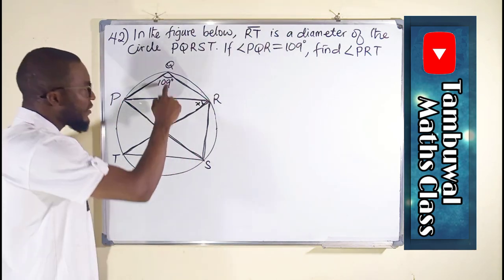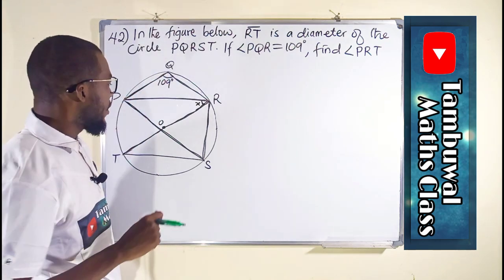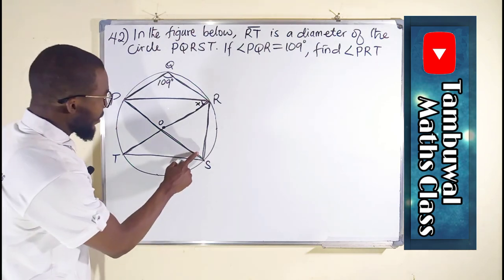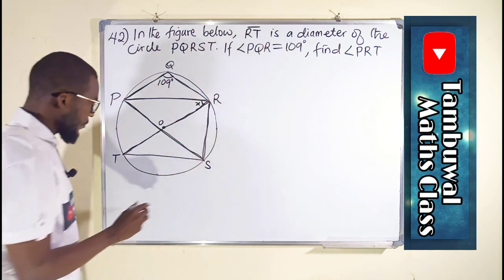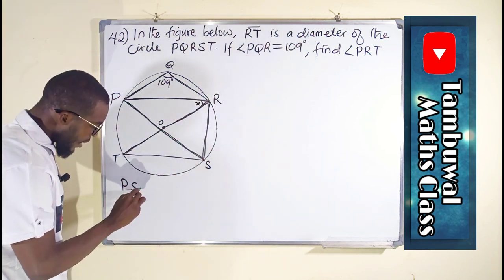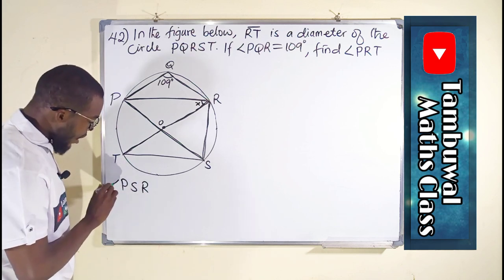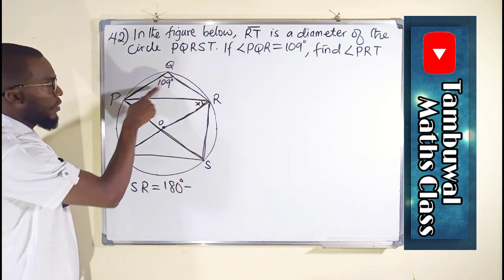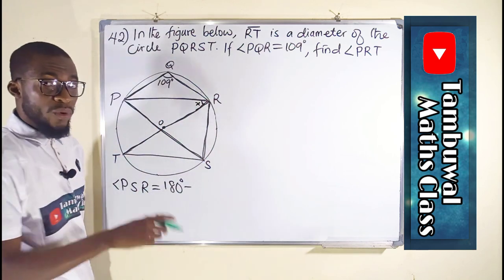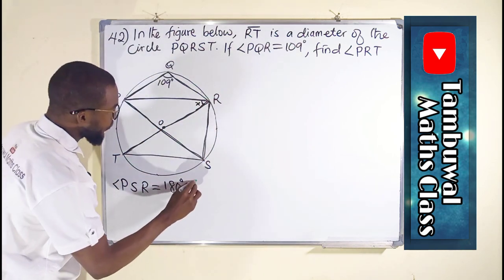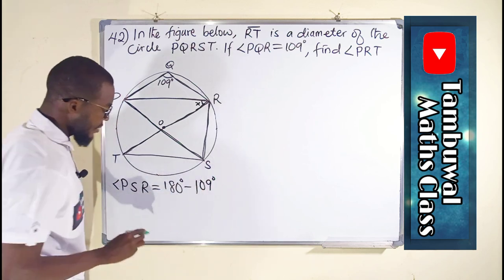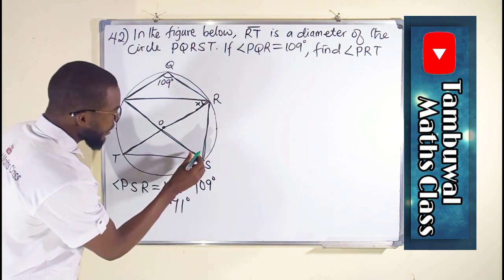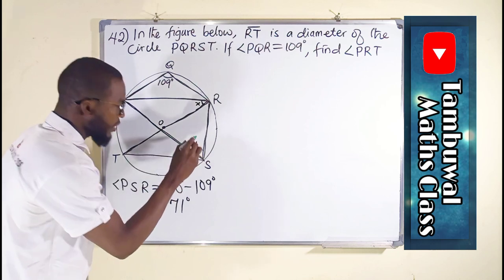So this angle here and this angle here, they are just opposite to one another. This means that if we add them together, we are going to obtain 180 degrees. So now let us find this angle, P, S, R, which is an angle, will be equal to 180 degrees minus P, Q, R. We are dealing with objective, don't forget, which is 109 degrees. And this is equal to 71 degrees. So it means that this angle here is 71 degrees.